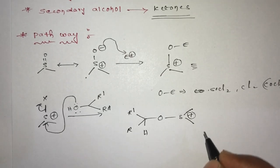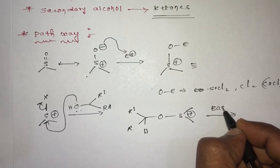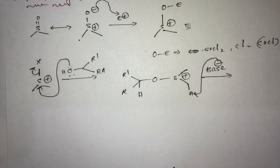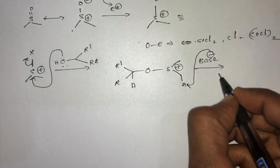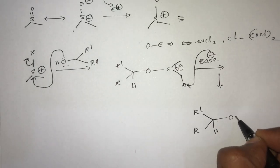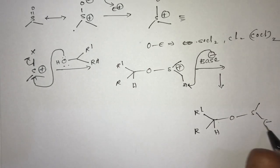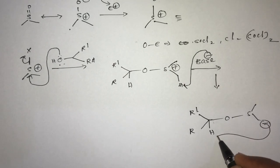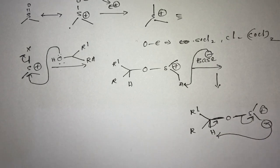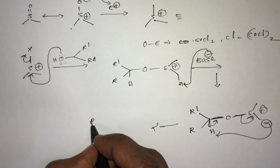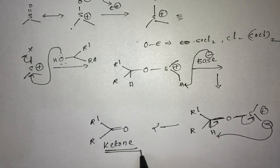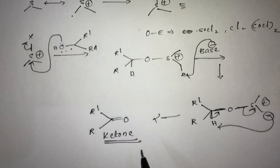When a base is added, it takes the proton from the intermediate. You get a negative charge, and this negative charge takes the proton — the bond migrates and this bond leaves. So finally you get a ketone. Since we took a secondary alcohol, the product is a ketone. This is the common reaction mechanism for activated DMSO oxidation.